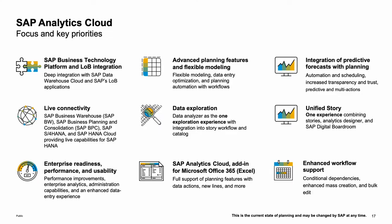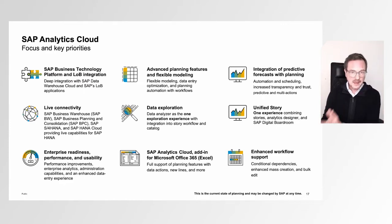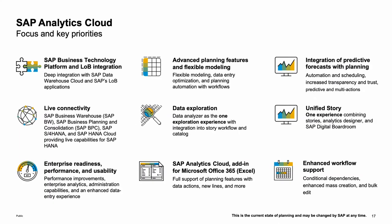Now let's focus on our nine investment priorities. Number one: integration into our Business Technology Platform and LOBs. Second: advanced planning features and flexible modeling — we will continue to invest especially in planning and modeling capabilities, and integrate predictive forecasting with planning. Then: live connectivity especially for HANA and BW; data exploration using the data analyzer; unified storage; enterprise readiness, performance, and usability as ongoing efforts; the SAP Analytics Cloud add-in for Microsoft Office 365; and our workflow support component, the calendar.